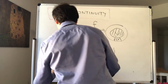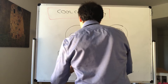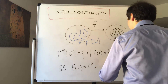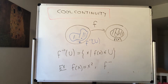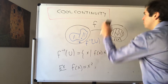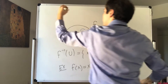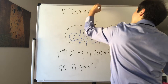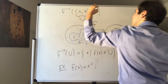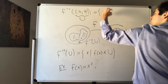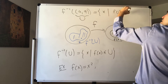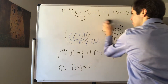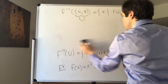Let's do the following example. Let's take f of x, again from ℝ to ℝ, to be x squared. And let's try to find f inverse of the interval (4, 9). By definition, that is the set of x such that f of x is in (4, 9). In other words, it's the set of x whose square is between 4 and 9.